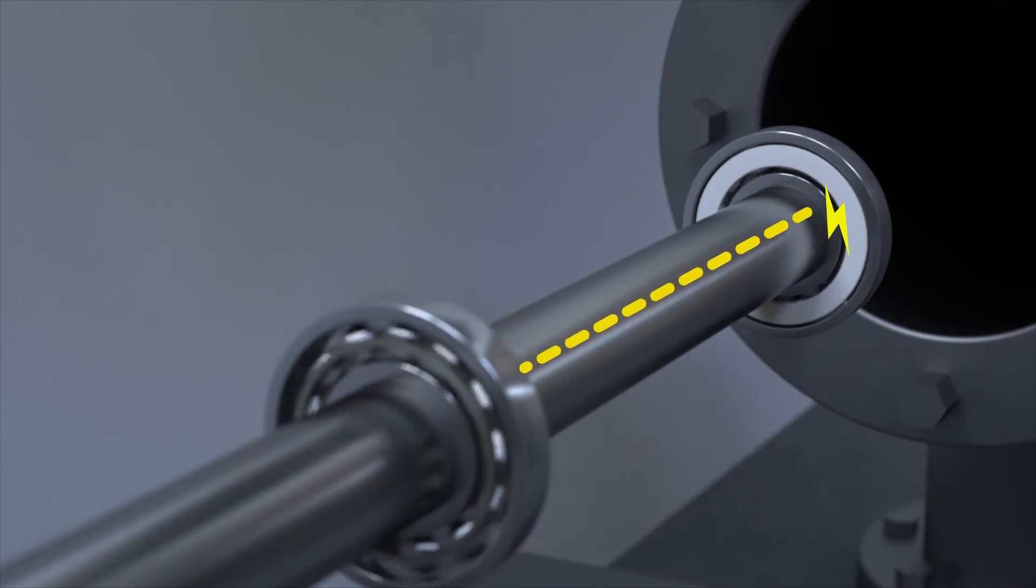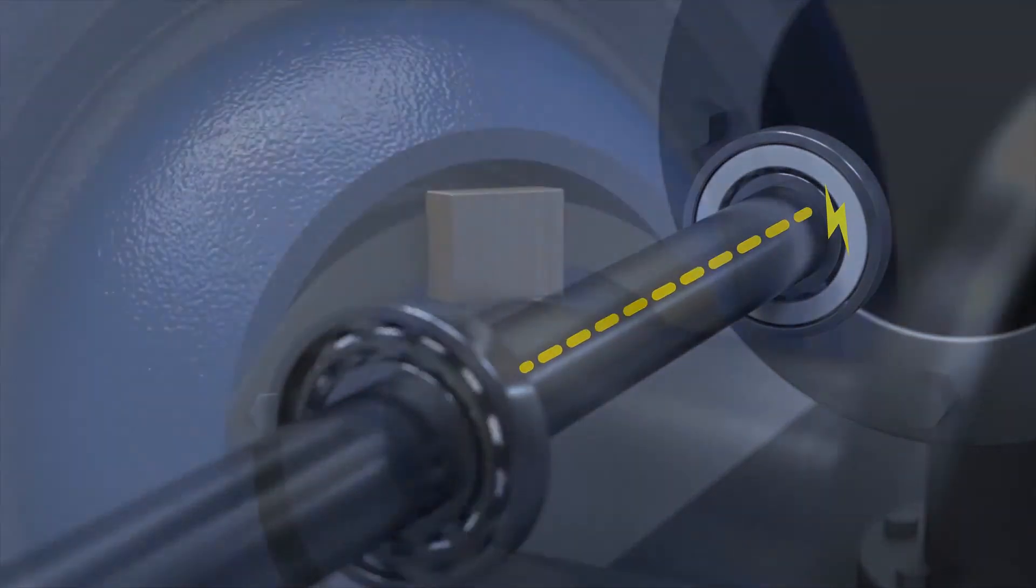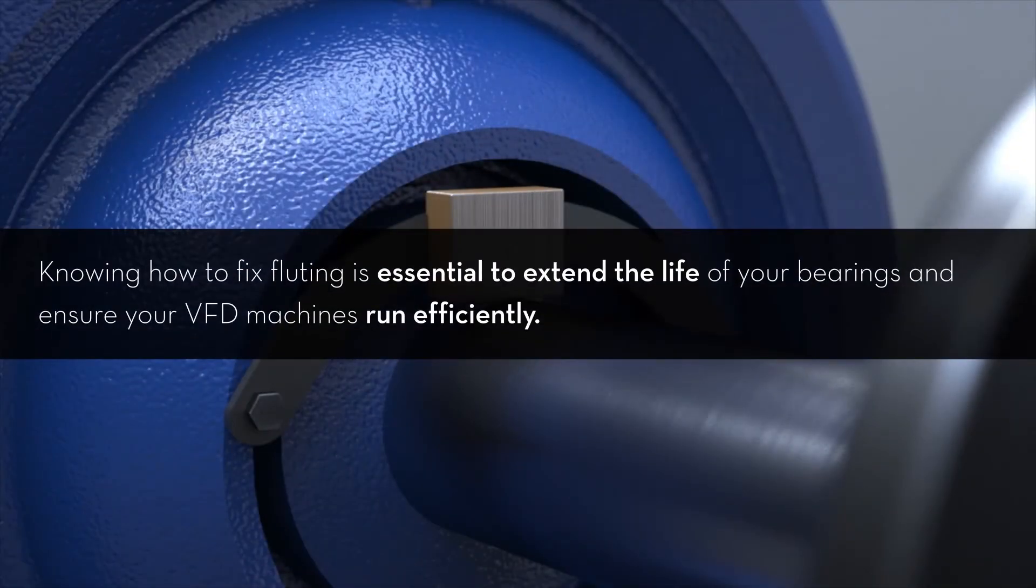Both of these fixes effectively redirect electrical current and voltage which can cause fluting. Knowing how to fix fluting is essential to extend the life of your bearings and ensure your VFD machines run efficiently.